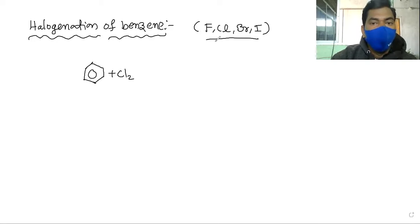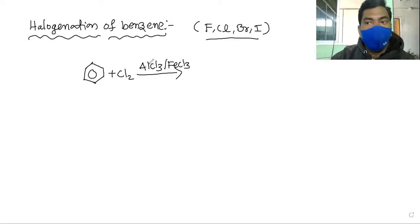Generally when benzene is treated with halogens - either fluorine, chlorine, bromine, or iodine - in the presence of a suitable catalyst AlCl3 or FeCl3 (iron trichloride or aluminum trichloride), it gives a chlorine substituted benzene, chlorobenzene, plus HCl.